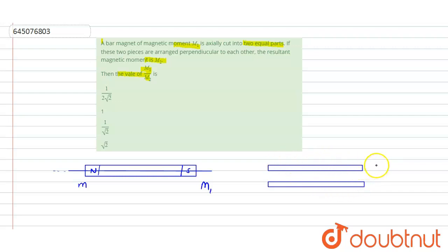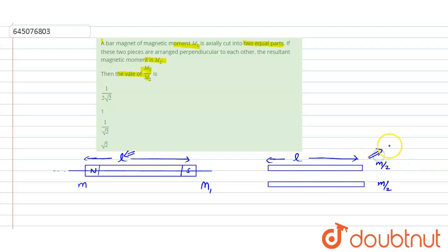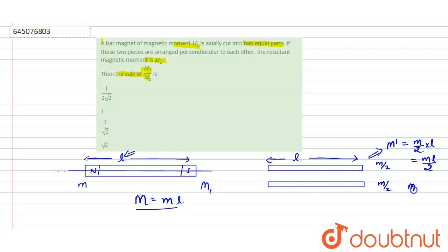Now the magnetic pole strength will be equal to m/2 for each part, but the length of both the magnets will remain the same. Now let us consider the length of this magnet is L, so the length of both these magnets will also be L. Now the new magnetic moment — let us call it M dash — for one half magnet will be equal to m/2 into L, which gives ML/2. But initially the magnetic moment is equal to pole strength into length, which is ML. So M dash will be equal to M/2.